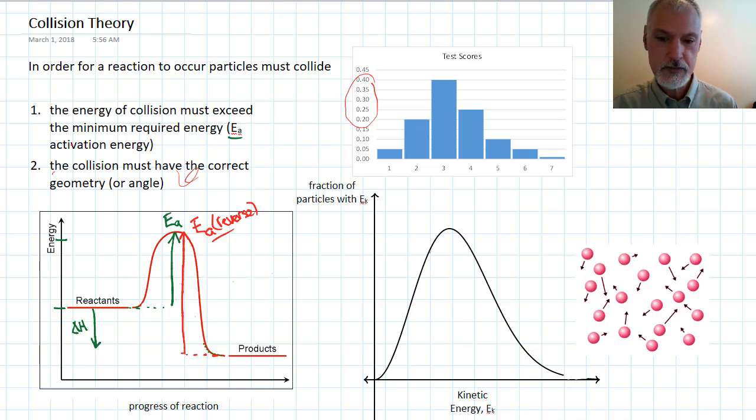So this distribution graph is giving me some indication of how much kinetic energy certain fractions of the molecules within this substance have. Now, let's look at where we find activation energy. Over here in green, my activation energy was about three and a half blocks long.